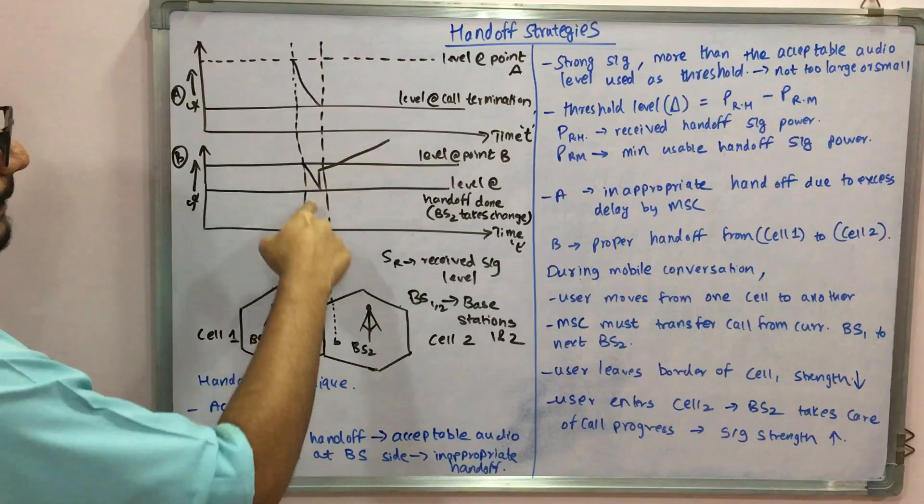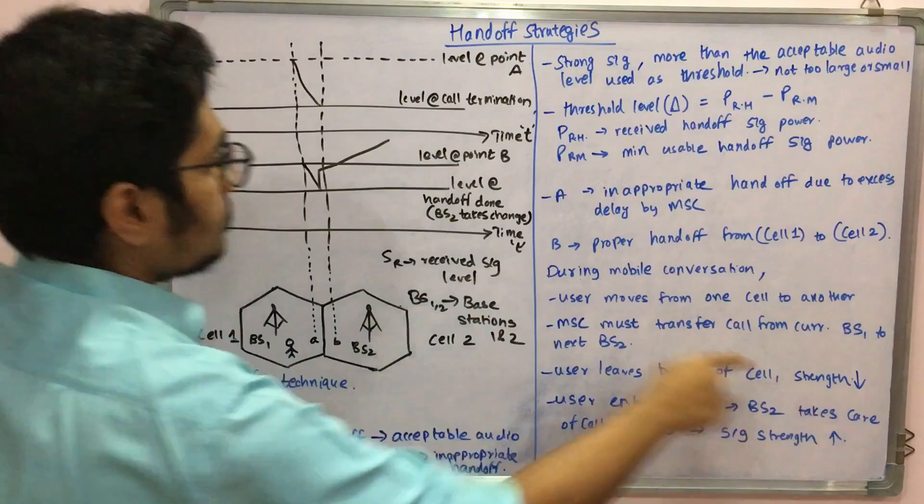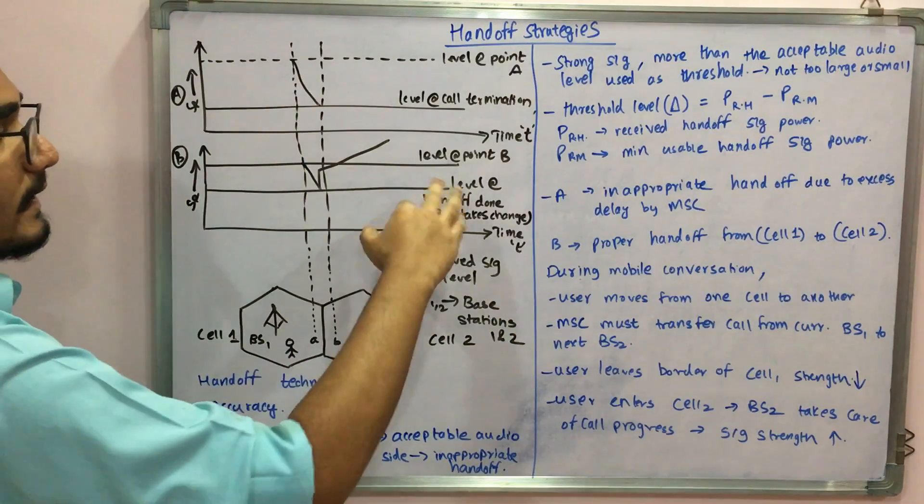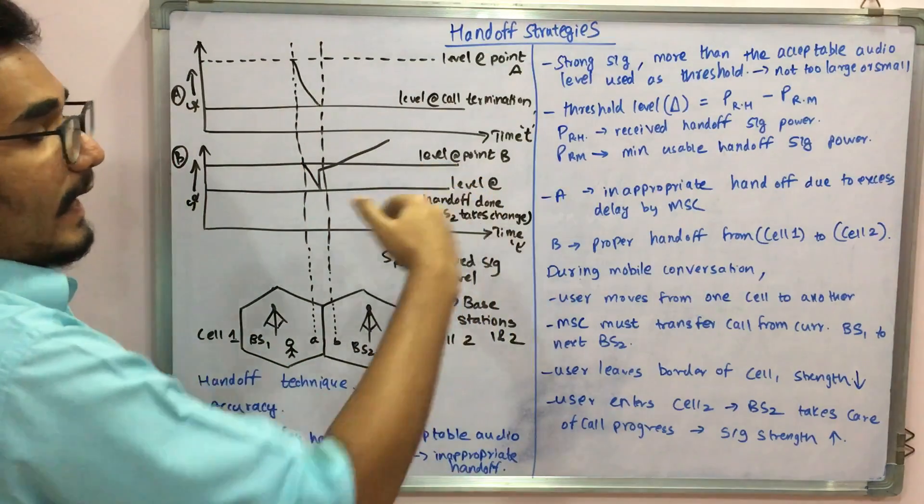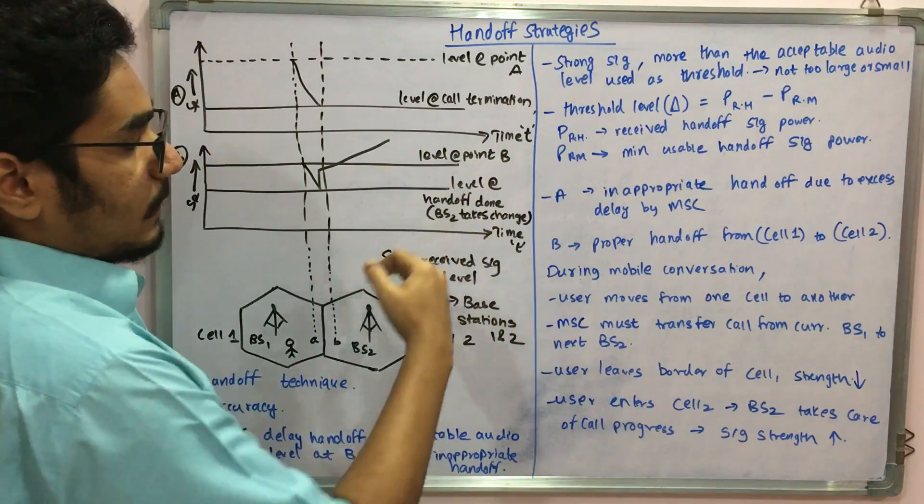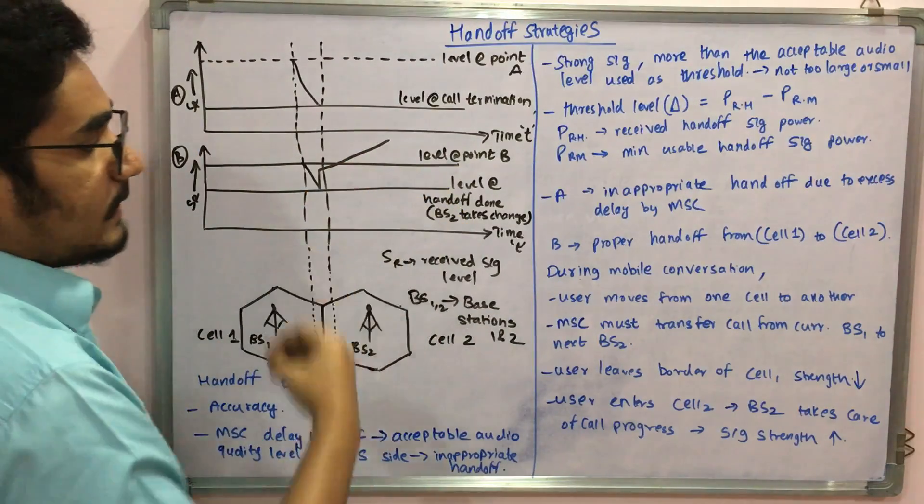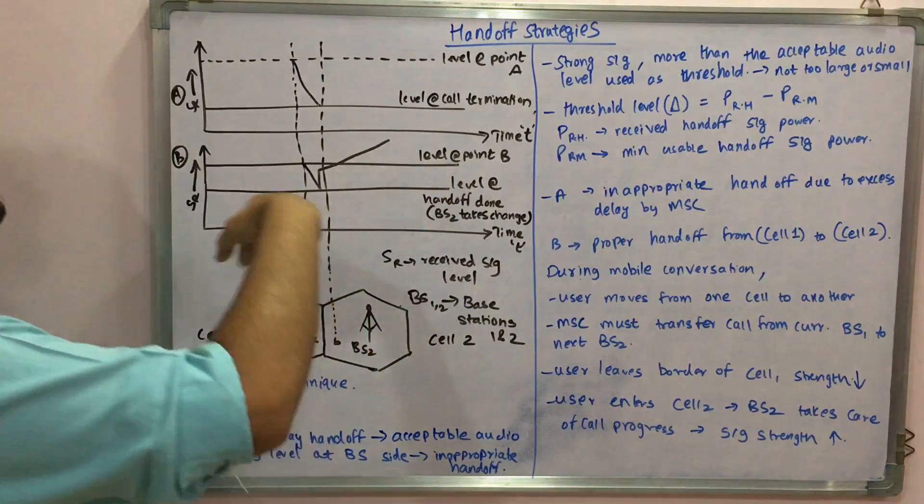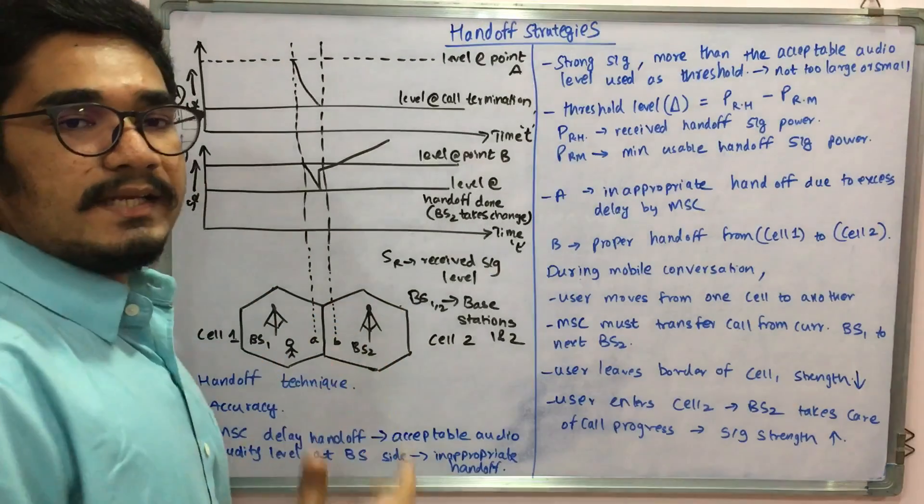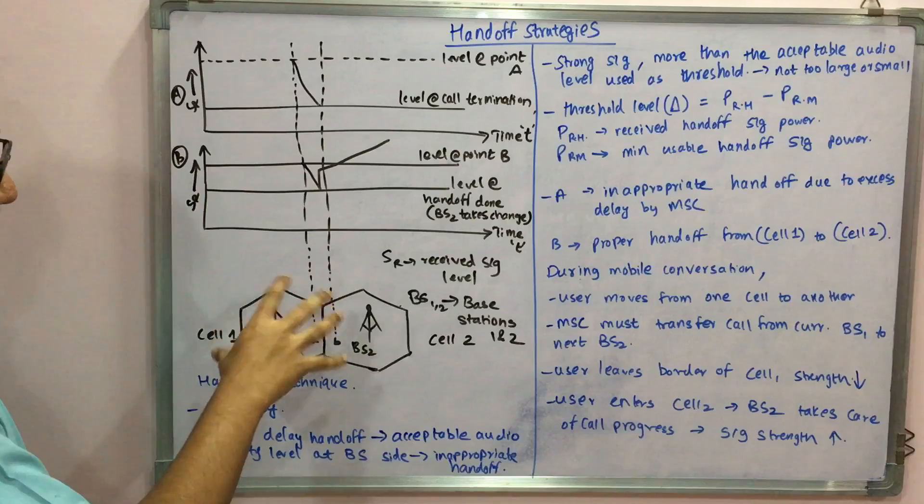Later, at level point B, this was the place where when the user leaves the border, the signal strength decreases. This point signifies here. Then when he entered base station 2, the level at handoff is done and it's made by base station 2. It takes charge of it and shoots it up so he can make a call. This is the technique and these are the cells and base stations.